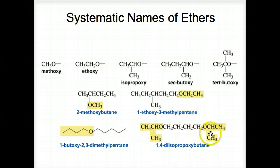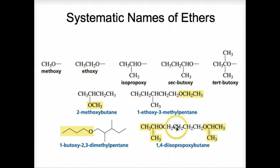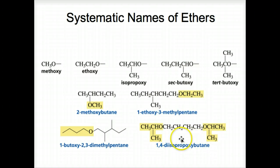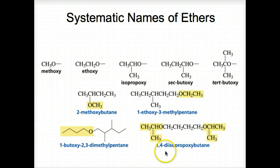A curious structure here: 1,4-diisopropoxybutane. Butane is in the middle of the molecule, and we have two isopropoxy groups, one on each end — one on number one carbon and one on number four carbon. Since it's one and four, the substituent is on both ends of the molecule; di also tells us there are two of them. So we name it 1,4-diisopropoxybutane.